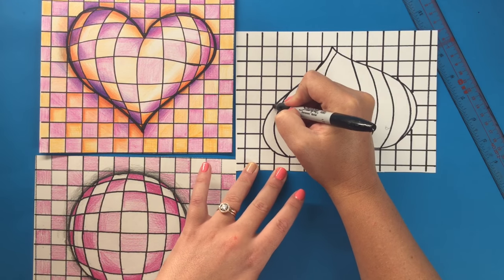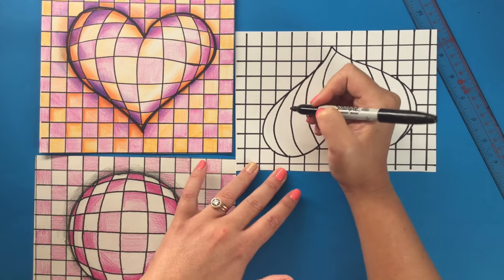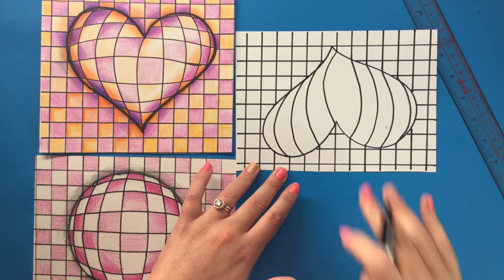And then this one, when I get to this line, it's actually going to follow the contour of the shape. So I don't quite need to do that line.